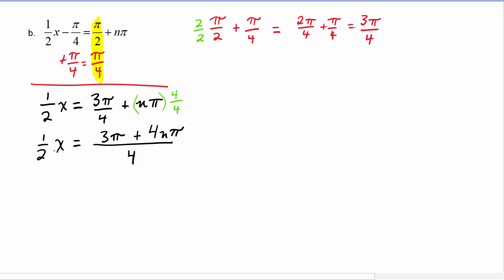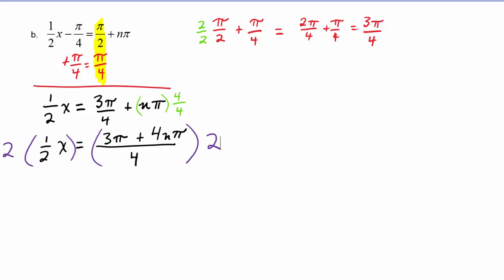Now to solve for x, we need to multiply both sides times two. And the left hand side simplifies to be x. On the right hand side, we can do a reduction first: two goes into two once, two goes into four twice. So the right hand side becomes three pi plus four n pi divided by two.